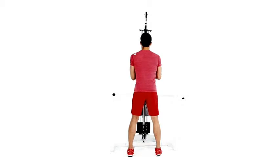Holding the attachment and supporting the weight, bring your elbows to your side so your forearms are parallel to the floor. This is the starting position, and from here your elbows shouldn't move.